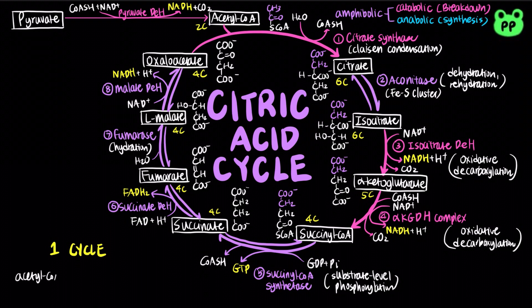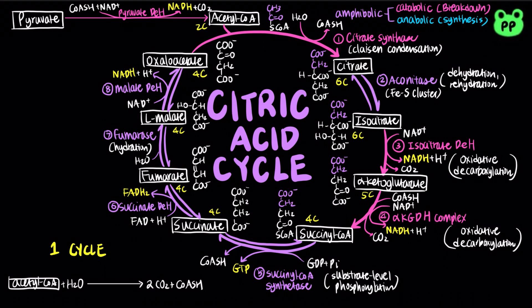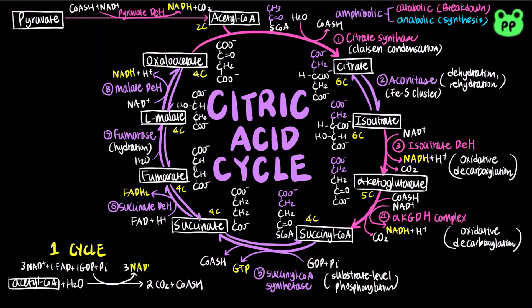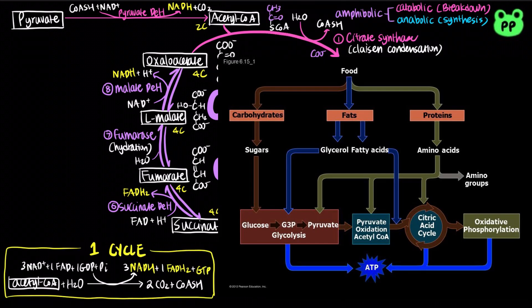The net reaction of one cycle includes the oxidation of acetyl-CoA to two carbon dioxide, and the free energy in this process is stored in three NADH, one FADH2, and one GTP molecule. NADH and FADH2 will be oxidized by the electron transport chain in oxidative phosphorylation to generate ATP, which will be discussed in future videos.